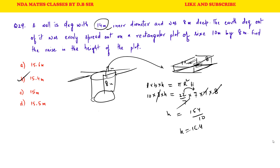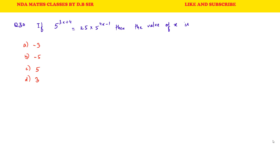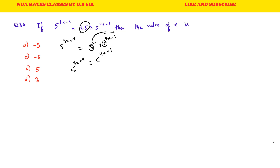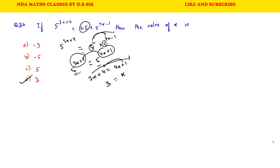Question 30: If 5^(3x+4) = 25 × 5^(4x−1), then find the value of x. Rewriting: 5^(3x+4) = 5² × 5^(4x−1) = 5^(4x+1). Comparing exponents: 3x + 4 = 4x + 1, so 4x − 3x = 4 − 1, giving x = 3. D is the correct answer.